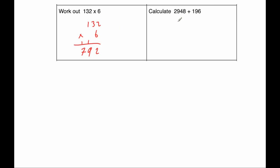And our next question is an addition question. So we've got 2948 plus 196. And when we work that out we get, well, 6 plus 8 is 14. So put the 4 down, carry the 1. 4 plus 9 is 13, plus 1 is 14. So put the 4 down, carry the 1. 9 plus 1 is 10, plus 1 is 11. Put the 1 down, carry the 1. And 2 plus 1 is 3. So the answer will be 3144.